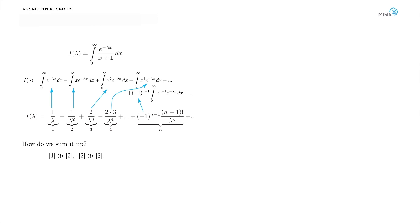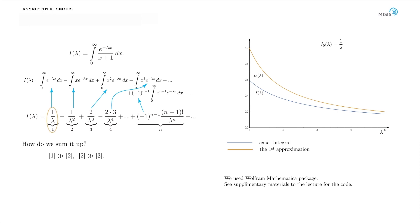So, let's actually plot different approximations. We take a reasonably large lambda from 1 to 5. This is an exact function I(λ), computed numerically with Wolfram Mathematica package. We can look up the Mathematica code in the supplementary materials to this lecture. And this is the first approximation, which is the first term in our series, i₀(λ) - it's simply 1/λ. We see that the error being large at small lambda gradually diminishes with the growing lambda.